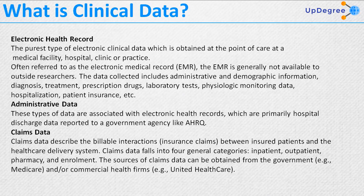Administrative data are associated with electronic health records and are primarily hospital discharge data reported to a government agency like AHRQ. Claims data describe the billable interactions between insured patients and the healthcare delivery system. Claims data falls into four general categories: inpatient, outpatient, pharmacy, and enrollment. Sources include government programs like Medicare or commercial health firms like United Healthcare.